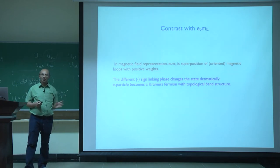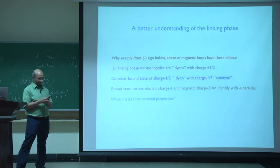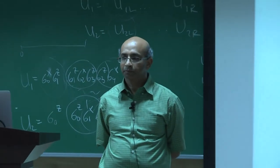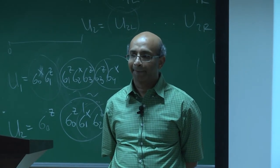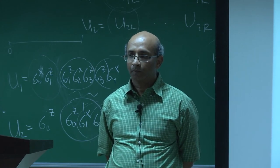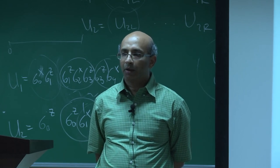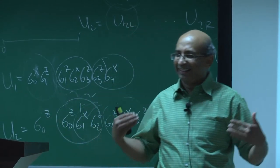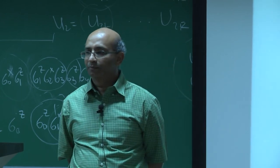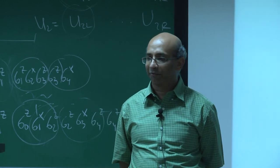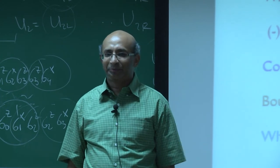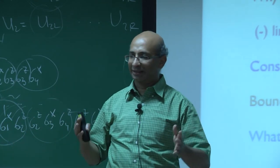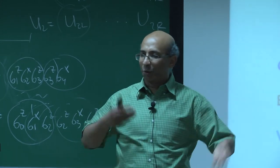This minus sign linking phase for magnetic loops is equivalent to the statement that the monopoles are dyons with electric charge plus or minus one-half. This simple change — a minus sign for the linking of oriented magnetic loops compared to positive-definite weights in the EBMB phase — dramatically converts the E particle into a Kramers doublet fermion with topological band structure. This can be understood through a numerical/wave-function approach: at the interface between this wave function and a vacuum with no linking phase, one expects boundary states with spectral properties characteristic of Dirac cones.